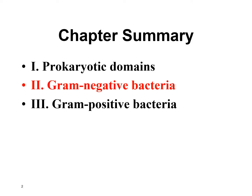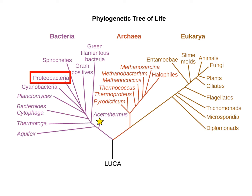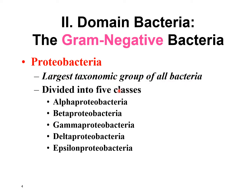We're going to start looking at some of the species of gram-negative bacteria. Looking at this evolutionary tree, we have LUCA — our last universal common ancestor — at the bottom. As we have our first branching, these are the bacteria domain. The gram-positive bacteria are here, and all of the others are going to be gram-negative. We're going to start by looking at the proteobacteria, which is actually the largest taxonomic group of all the bacteria.